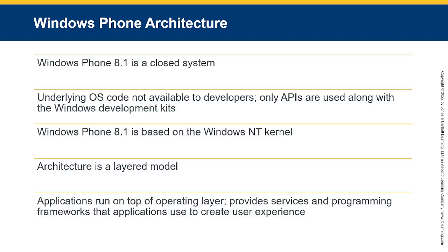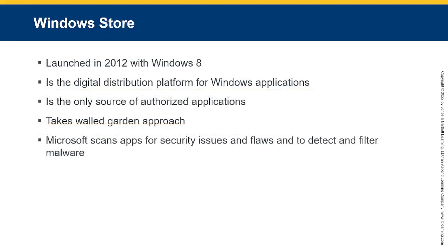Windows Phone 8.1 is based on the Windows NT kernel. Access is a layered model where applications run on top of the OS layer, which provides programming frameworks for applications used to create user experiences. The Windows Store was launched in 2012 with Windows 8. It is a digital distribution platform for Windows applications and is the only authorized source. It takes a walled garden approach — Microsoft scans apps for security issues upfront and filters malware.